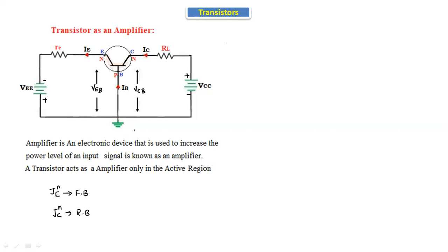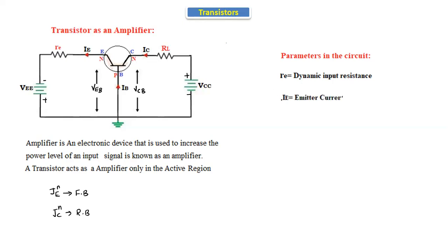When the transistor is in the active region, it acts as an amplifier. Now we'll see the circuit parameters. The resistor connected to the emitter terminal is re, which is the dynamic input resistance — it is on the input side of the transistor. Delta ie is the change in emitter current.